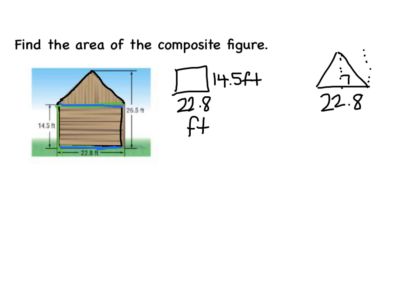Well, if I know that the whole distance is 26 and 5 tenths, and then these two distances are 14 and 5 tenths, then I could subtract 26 and 5 tenths and 14 and 5 tenths and get 12. So I know that my height is 12. So now I'm going to find the areas.